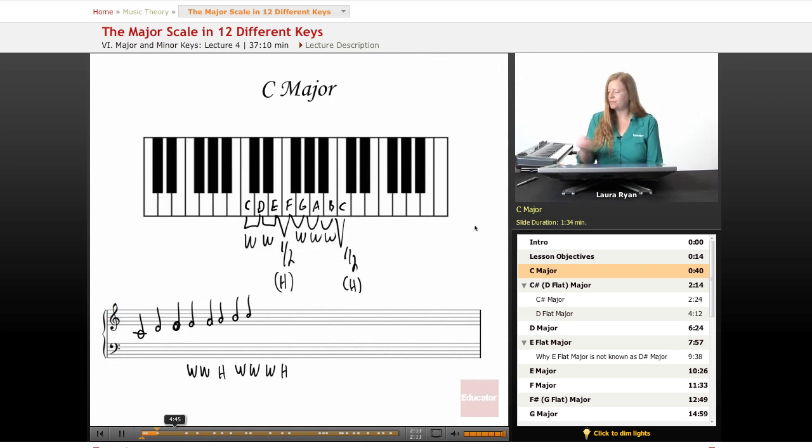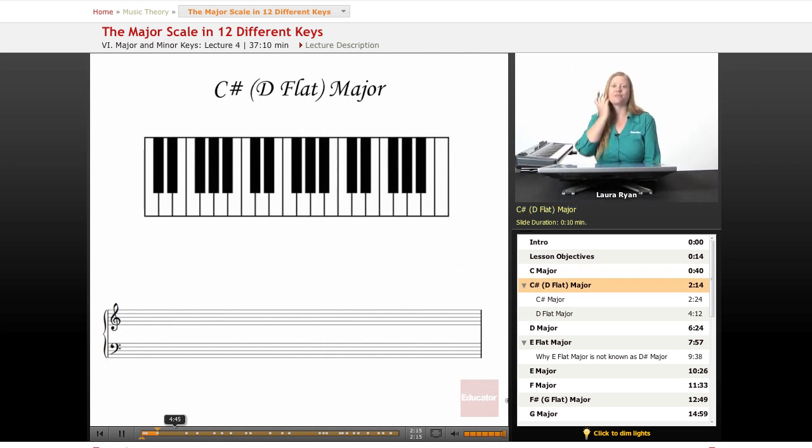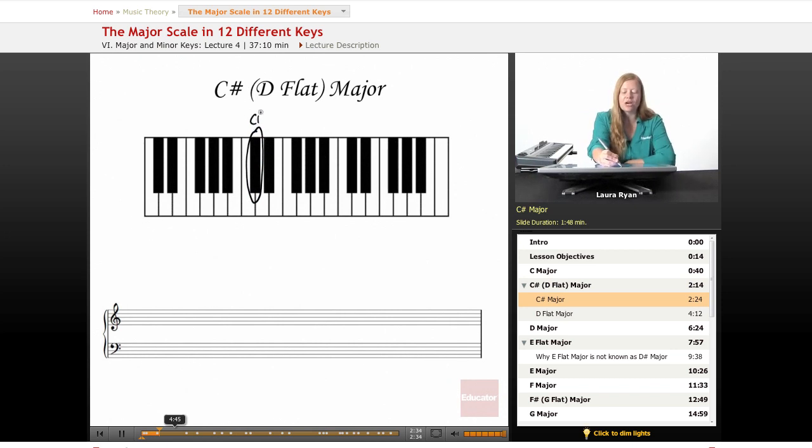Moving on, our next scale will be C sharp or D flat. This is an example of one of our enharmonic keys. It can be thought about in one scale or another and we'll talk about both. C sharp is this black key here. Let's find it on the keyboard. We're starting on C sharp. We need whole, whole, half, whole, whole, whole, half.